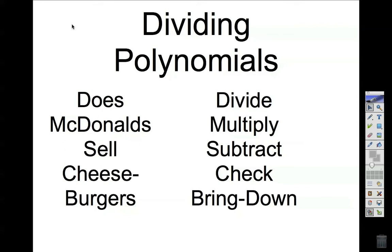I kind of modified it into 'Does McDonald's Sell Cheeseburgers' — hopefully that helps you remember divide, multiply, subtract, check, and bring down. We are checking if the inside degree is less than the degree of the outside polynomial. If the answer is no, we repeat the process. But if the inside degree is less than the outside degree, we bring down if necessary, and that ends the long division.